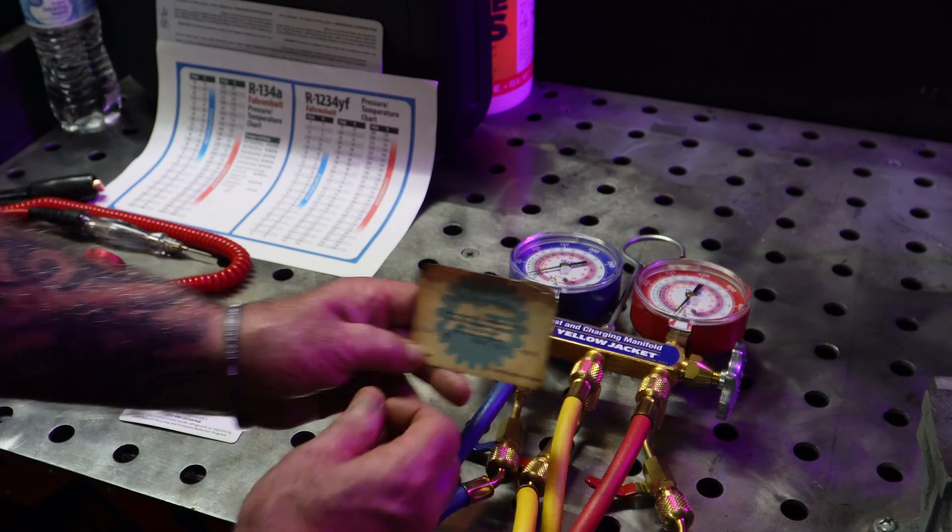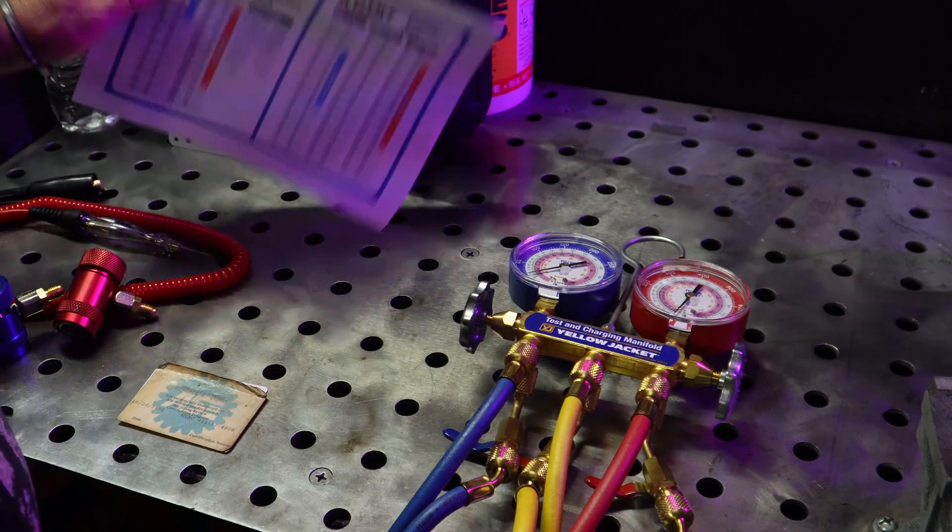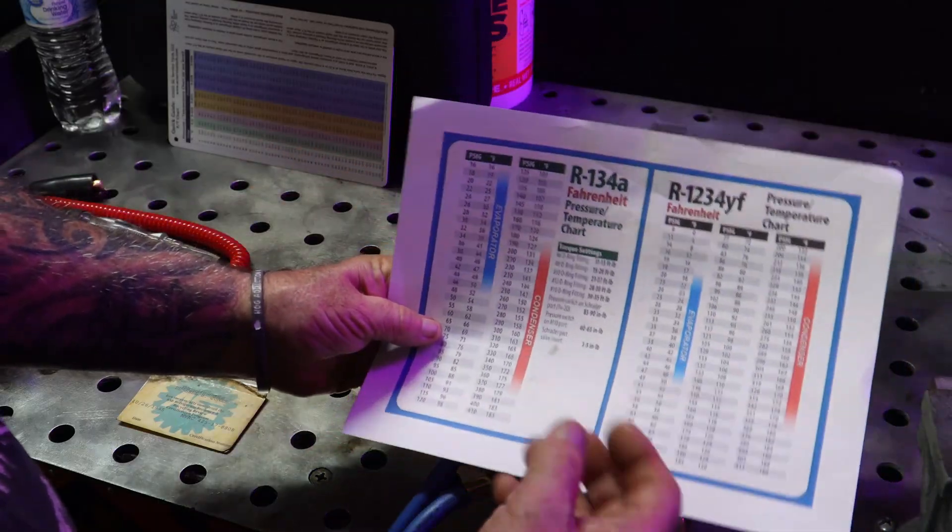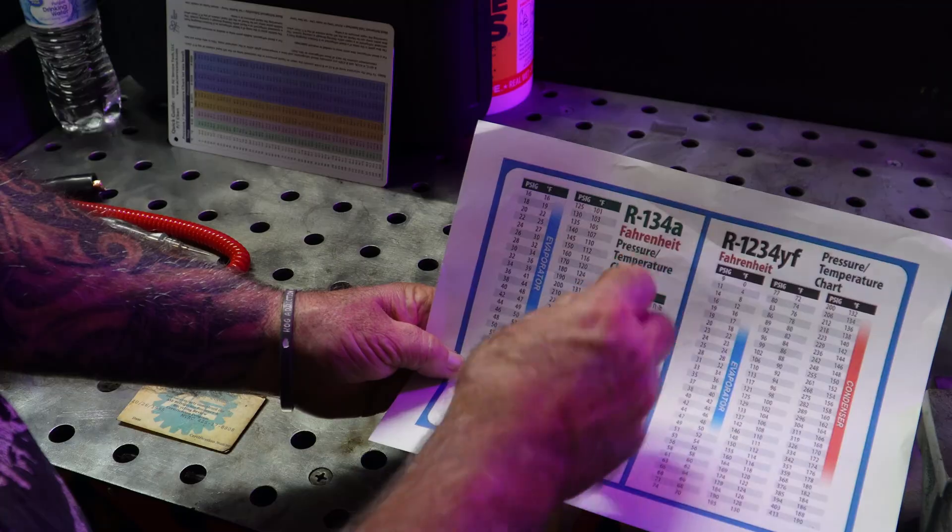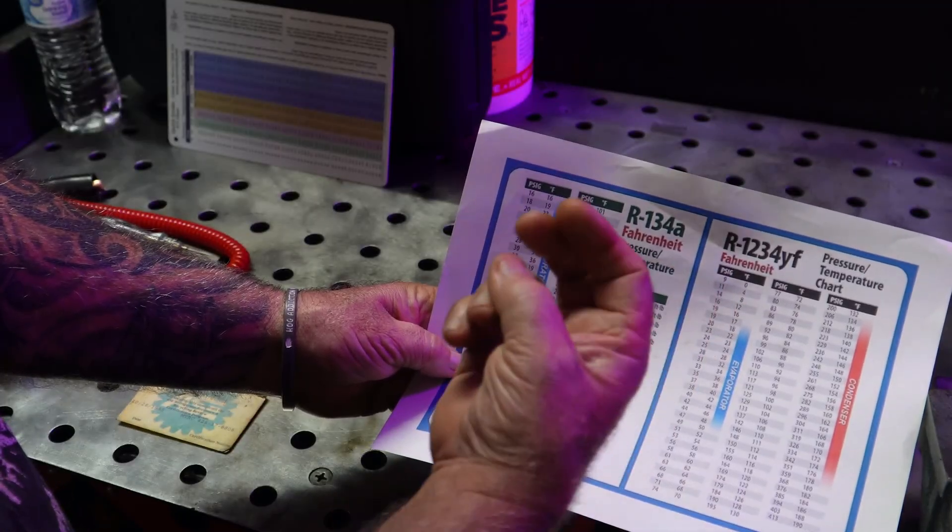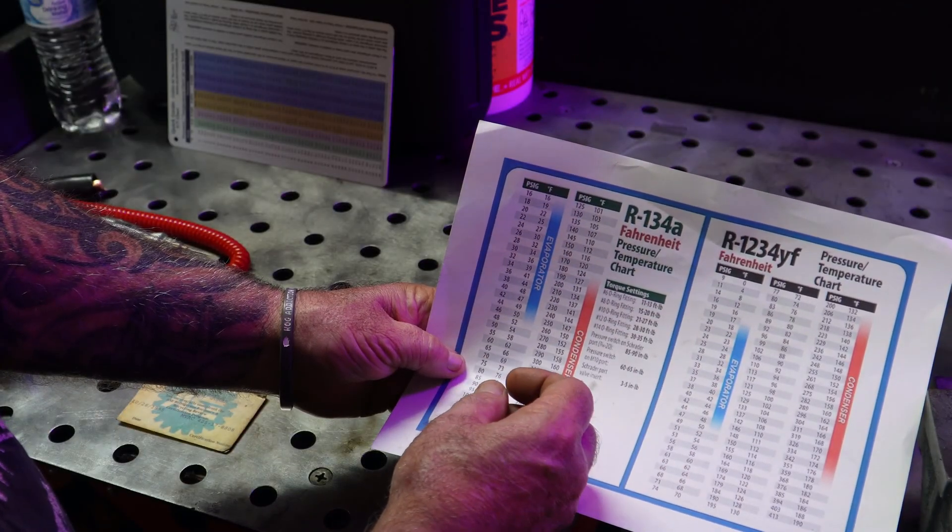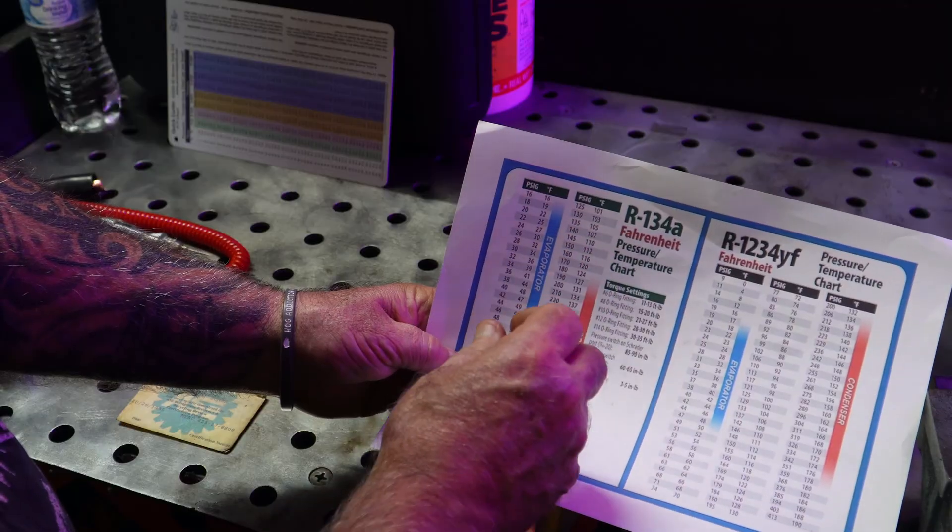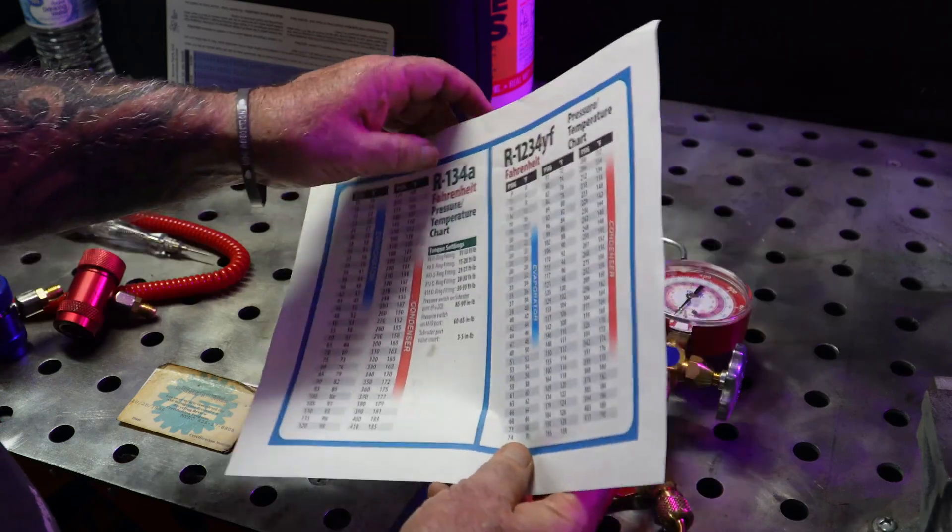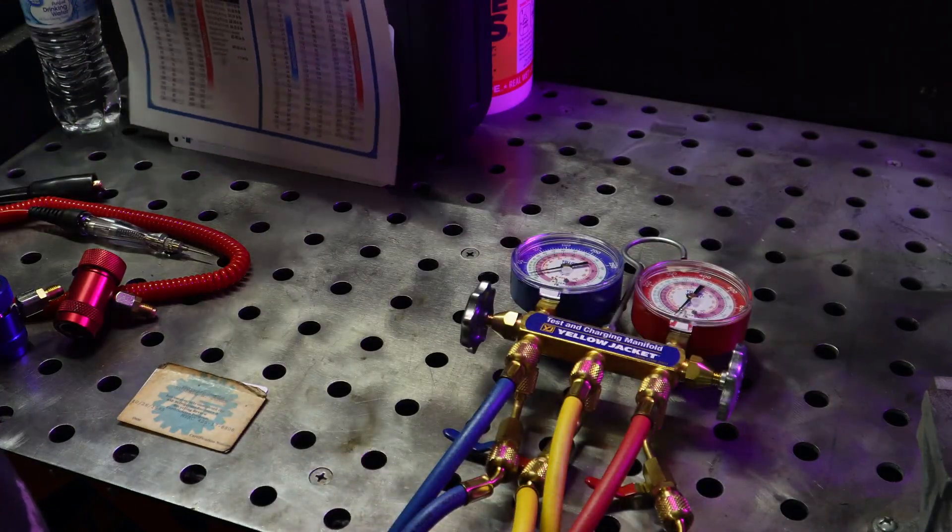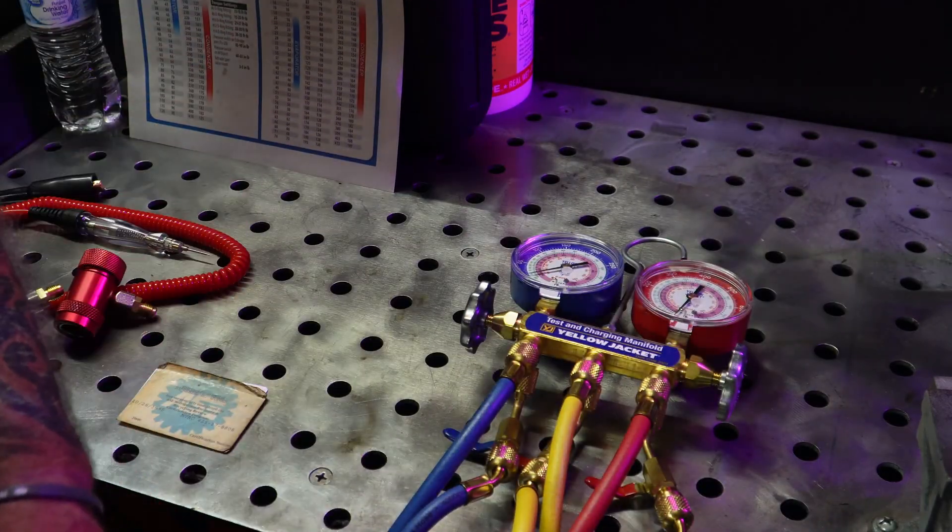Anybody can walk into an AutoZone or O'Reilly's or whoever and purchase R134a up to two pounds. That's allowed. I don't know what prevents somebody from buying two pounds at AutoZone, run up to O'Reilly's and get another two pounds. That's not a very strict rule on that, but as I mentioned, it's been going through a phase out as well.